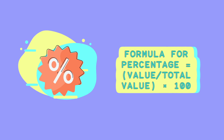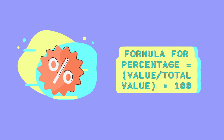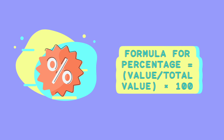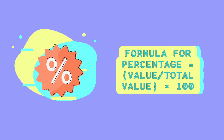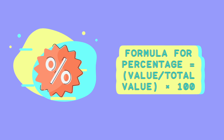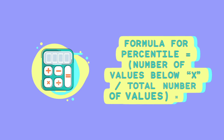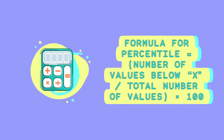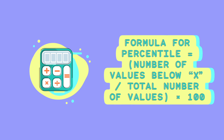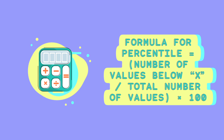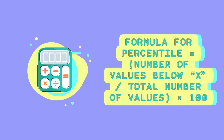The formula for percentage is: value divided by the total value, multiplied by 100. As in our case, 40 marks divided by 50 marks equals 80%. Percentile is equal to the number of values below X, divided by the total number of values, multiplied by 100. As in our example, 30 divided by 40 students, that is the 75th percentile.